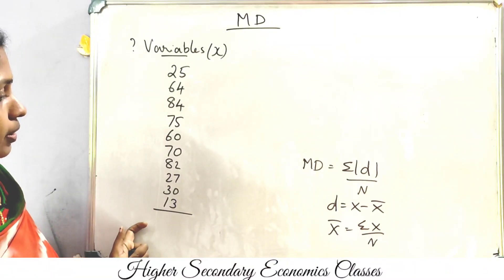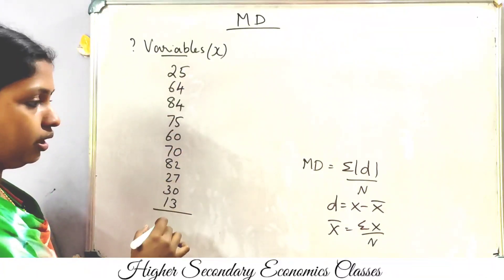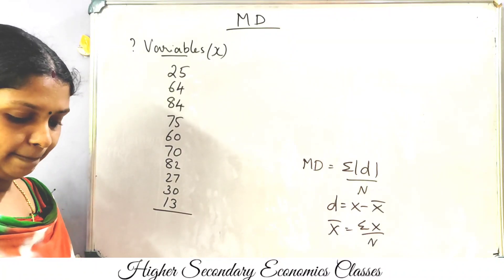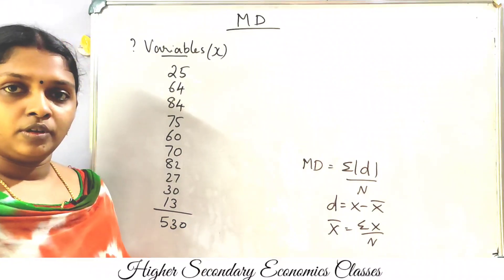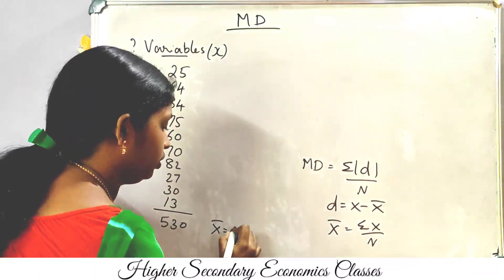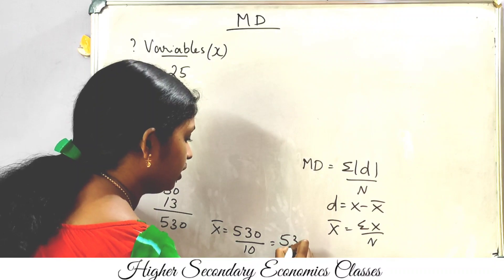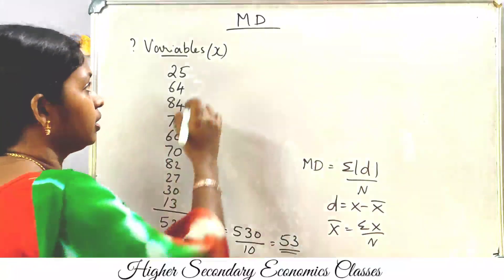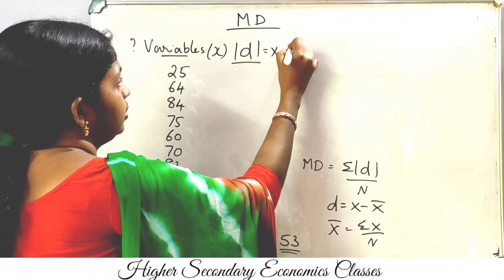We will talk about 10 variables. We will calculate the total and set up the deviation table. Now, x-bar is equal to 930 by 10. The arithmetic mean is 93 — wait, 53. So if we set up the table, modulus d is equal to x minus 53.